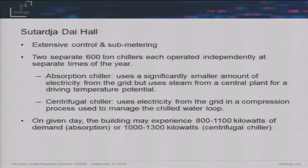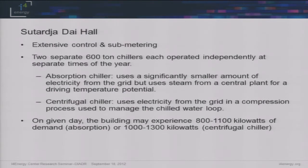Initially, when we started building the baseline, we had some interesting issues with the centrifugal chiller where it was short cycling pretty frequently, almost multiple times in a day, and we were having a lot of issues developing a baseline that could capture that kind of behavior. The initial thought was to go with something simple and try to build correction factors. Running through building correction factors and putting a simple model together, we realized that if you just picked off a time period of 15 minutes you would have a huge jump, and we were seeing large errors with a simple model.